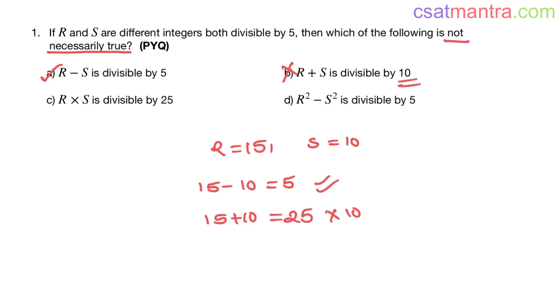You no need to solve further. Let's check option C and D. 15 into 10, R into S, that is equal to 150. 150 is divisible by 25. 25 into 6, right, that is equal to 150.